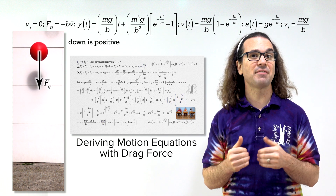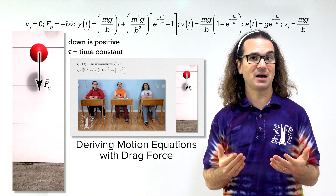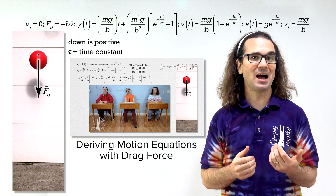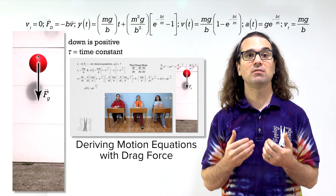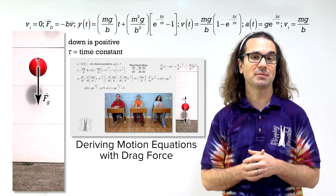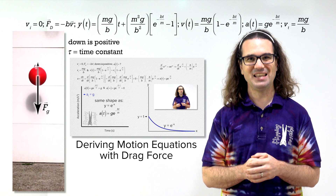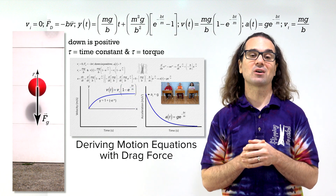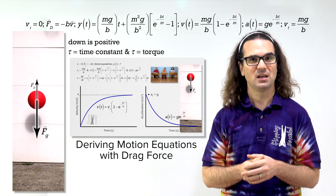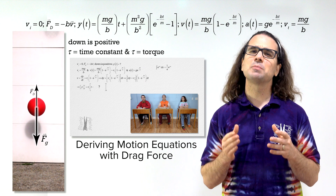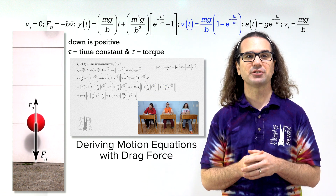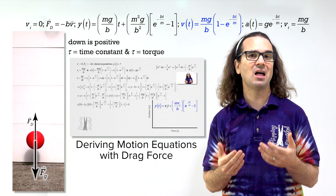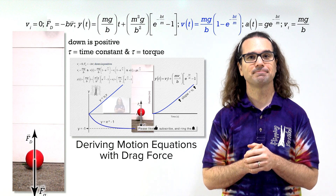What we are doing today is defining the time constant. The lowercase Greek letter tau is the symbol for the time constant, and yes, it is the same as the symbol for torque. I am sorry. Let's look specifically at our velocity equation. Billy, please read the velocity as a function of time equation.